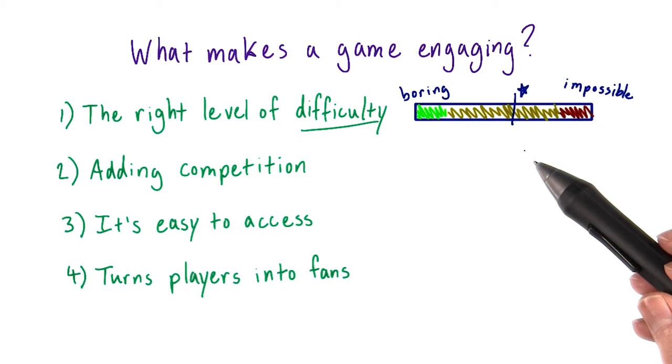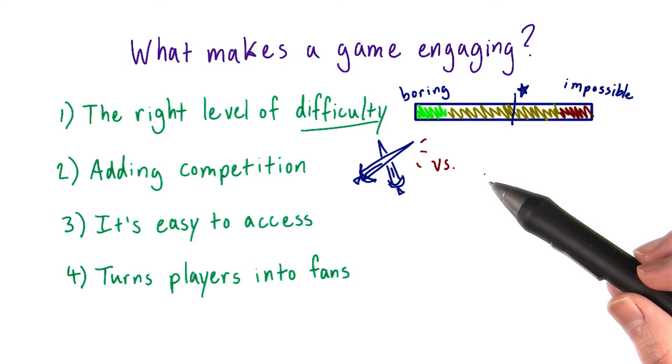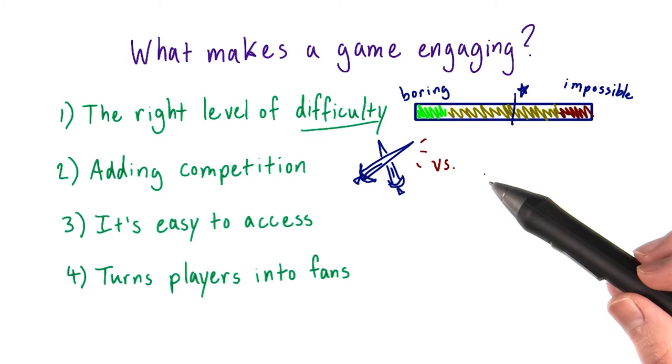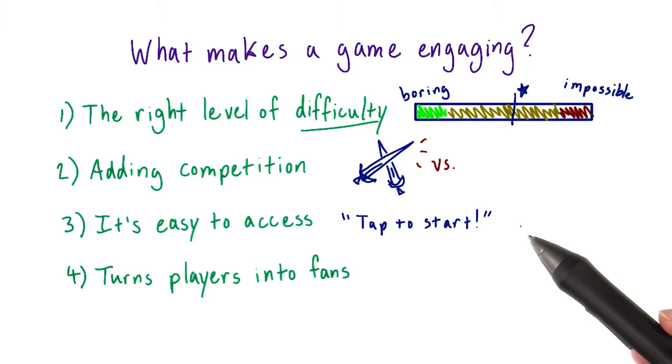In this lesson, we'll talk about how to get the right level of difficulty in your game, adding competition in your games, making your game easy to access and play across multiple devices, and also turning your players into fans. These are the four components that we've seen all engaging games include.